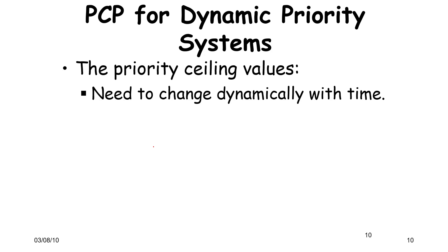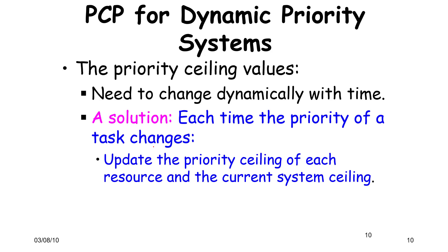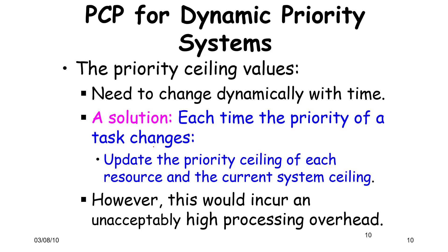For dynamic priority systems, the priority ceiling values are changing dynamically with time as and when we are acquiring and releasing resources. Each time the priority of a task changes, we need to update the priority ceiling of each resource, assuming that it's a dynamic system, and the current system ceiling.